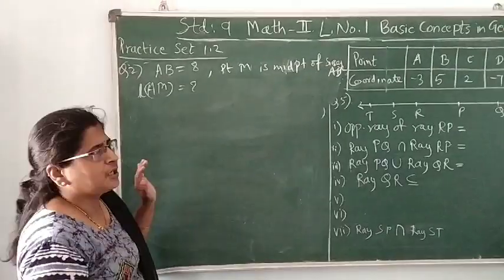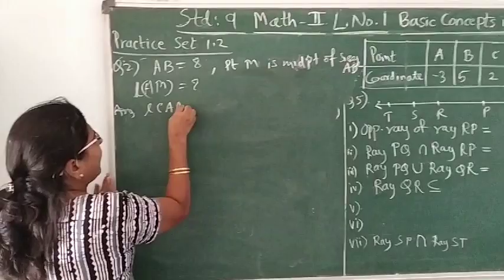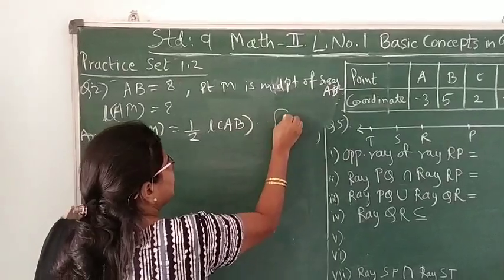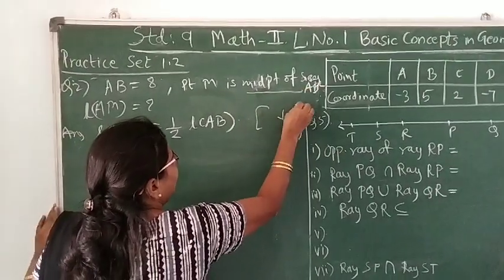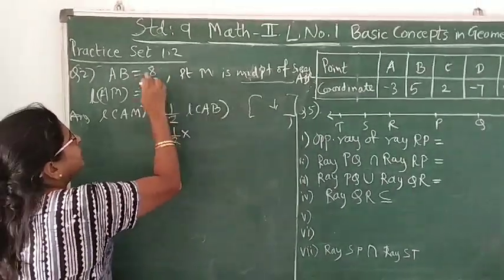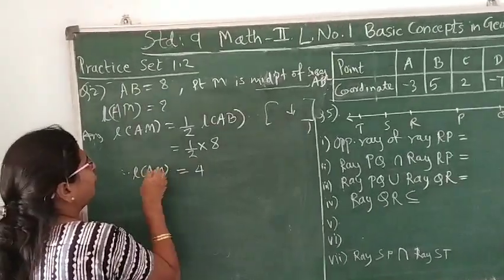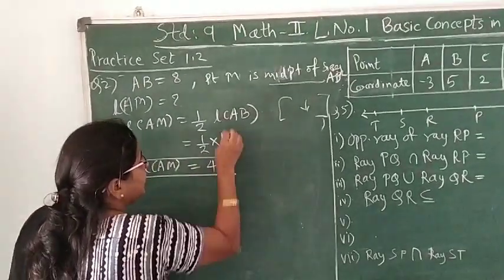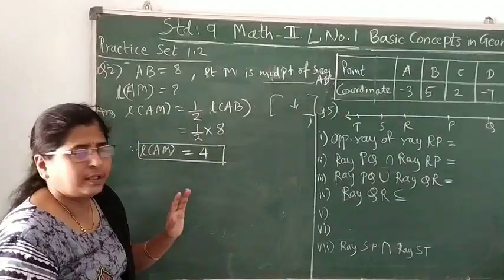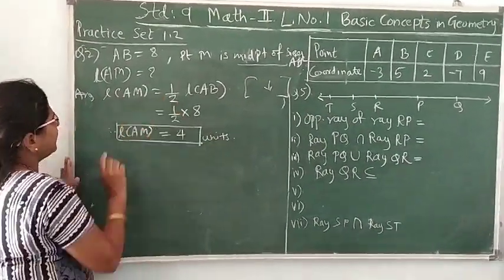So you will write your answer as: length AM equals half of length AB. In brackets you can write the reason: point M is the midpoint of AB. And then you can write half of length AB. What is length AB? It is given as 8. And therefore, length AM equals 4. If you have given centimeter here, then you should write centimeter here also. If nothing is given, you need not write anything. Or if you want, you can write units. That's it. This is the presentation.